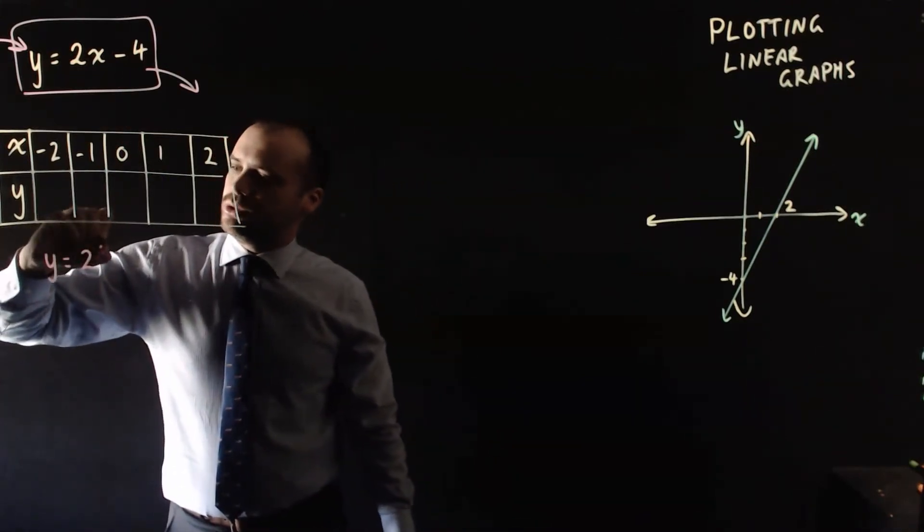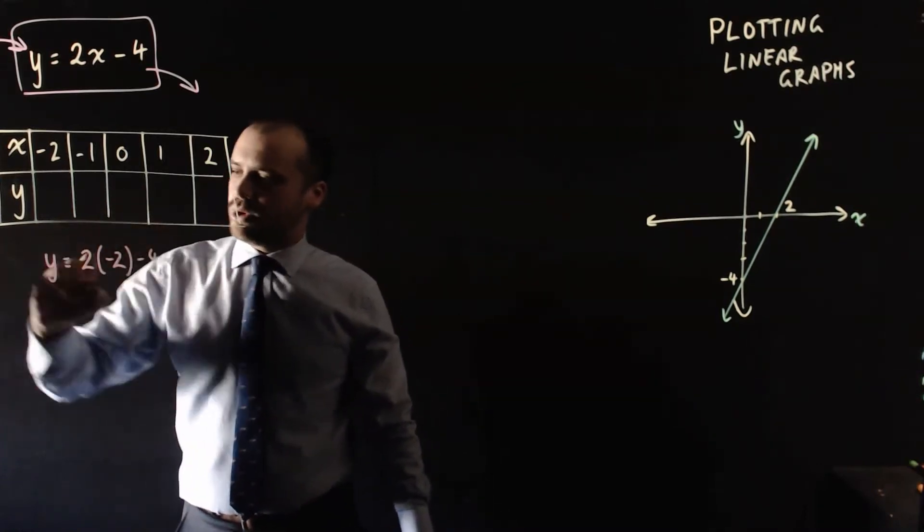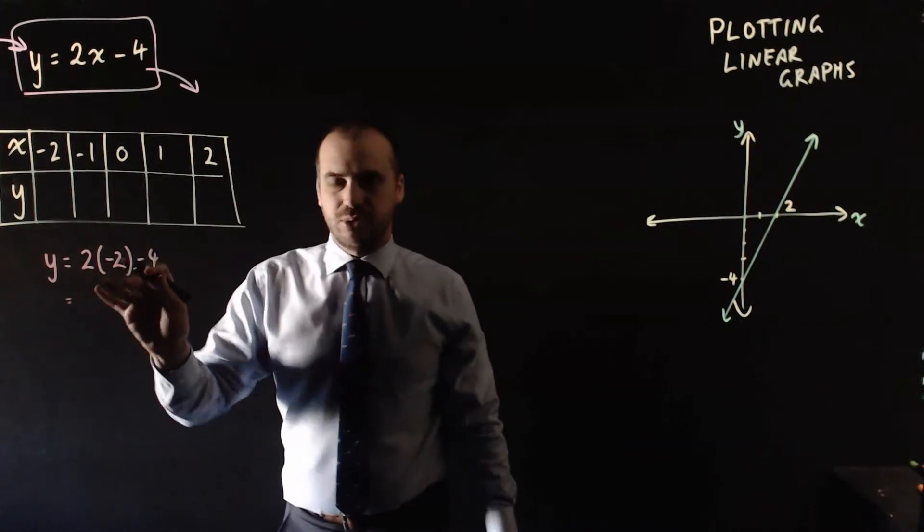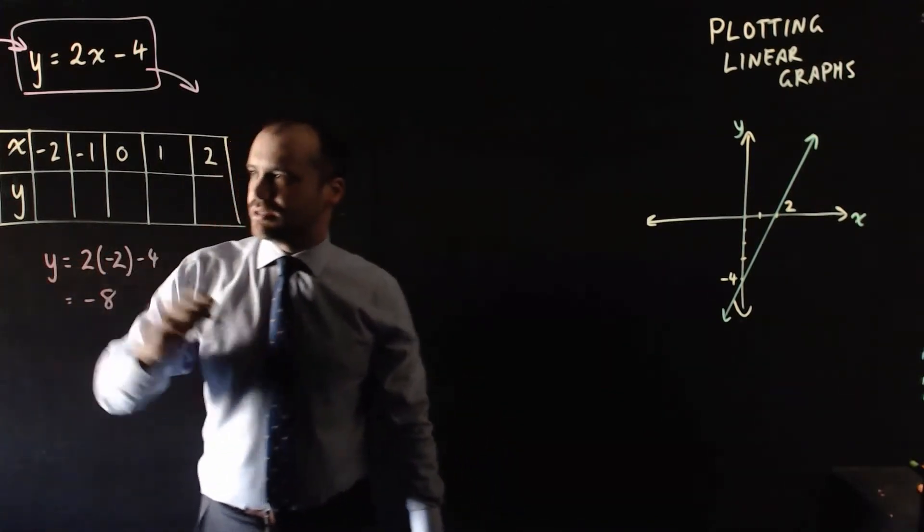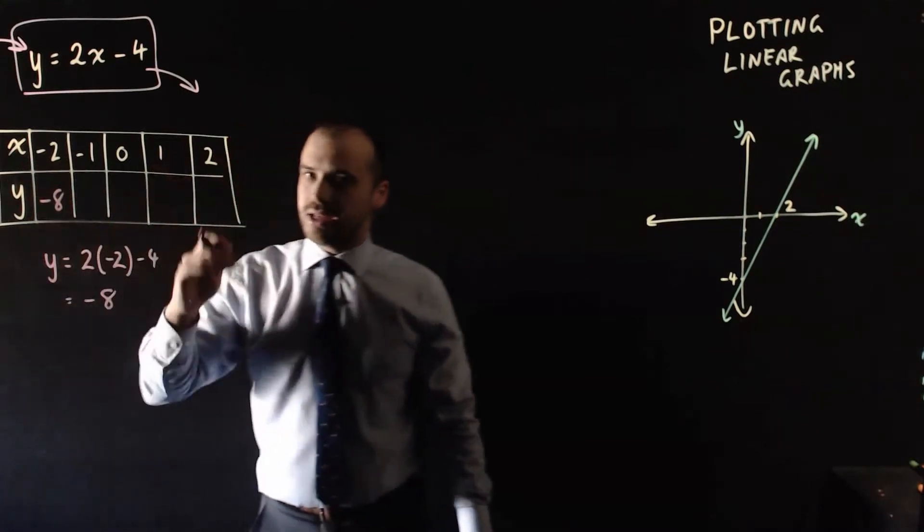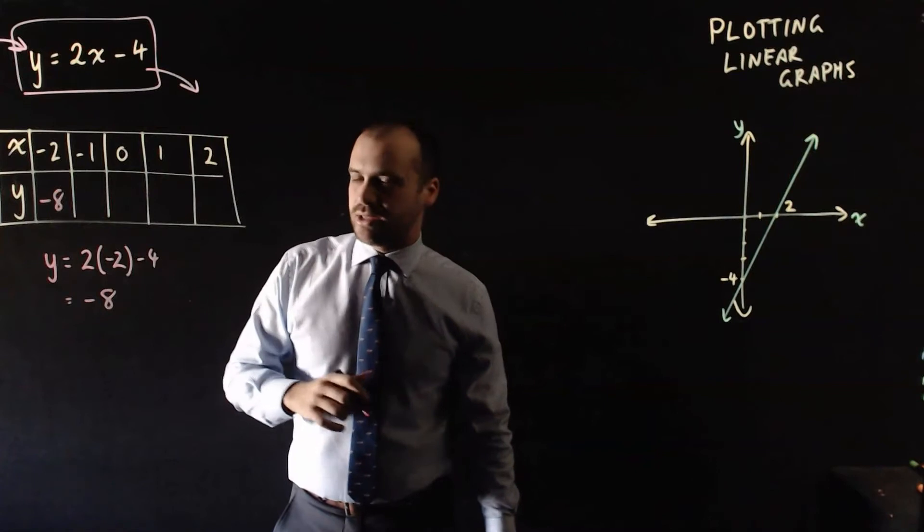y is equal to 2 times negative 2 minus 4. 2 times negative 2 is negative 4, minus 4 is negative 8. So again, it's a box. We put negative 2 into it and it spat out negative 8.